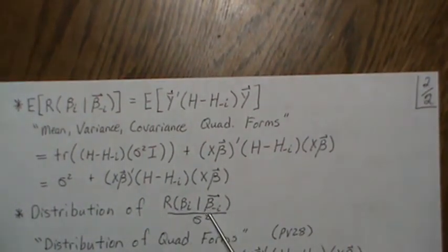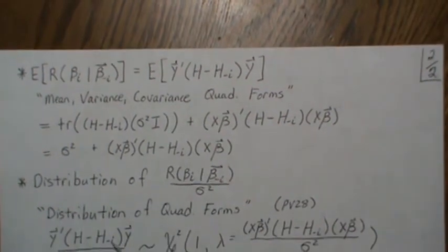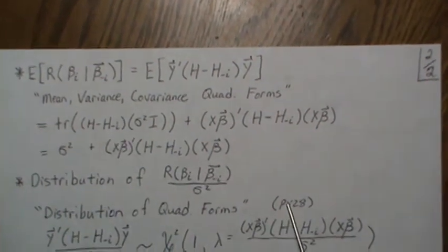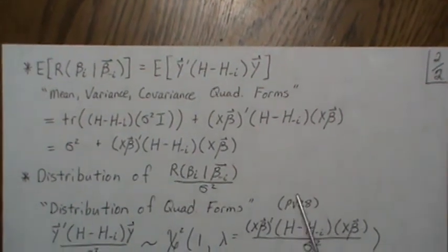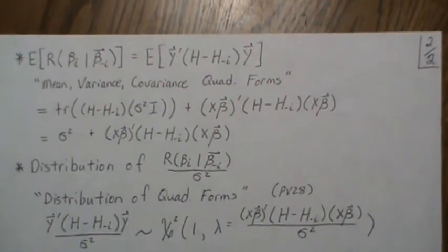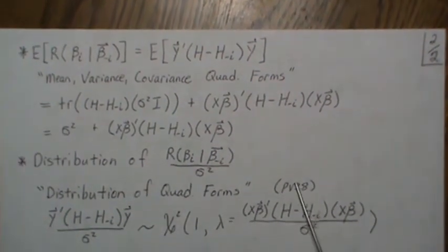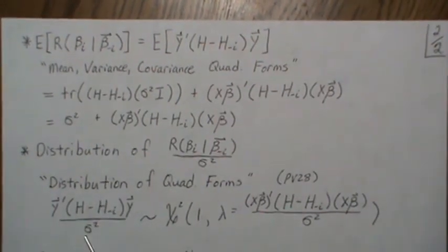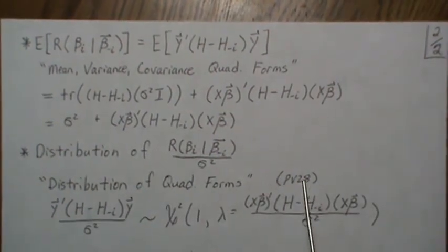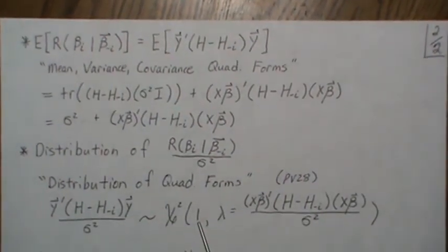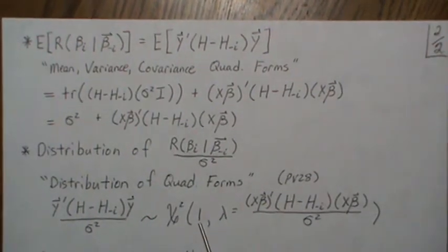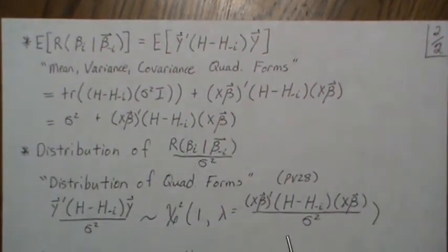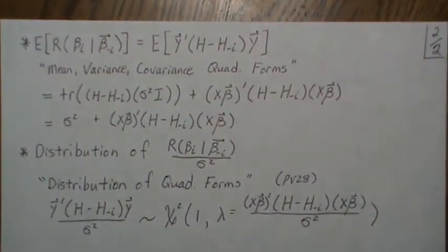For the distribution of this type 2 sum of squares, deferring to the distribution of quadratic forms and PV28 where we do it in more detail for type 1 sum of squares, we know it follows a chi-squared distribution with one degree of freedom — equal to the rank of the matrix — and a non-centrality parameter given by the mean of y transposed through this matrix times the mean of y, divided by sigma squared.